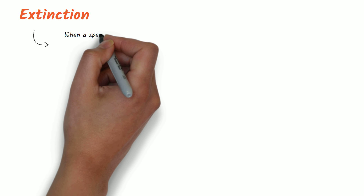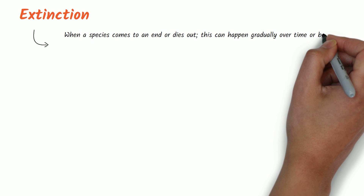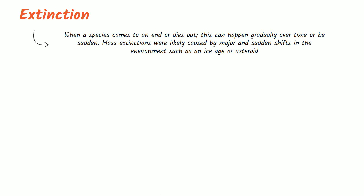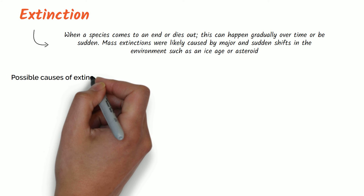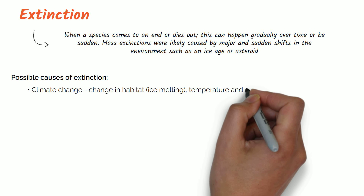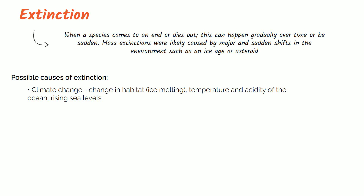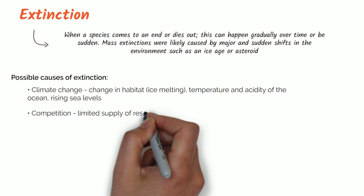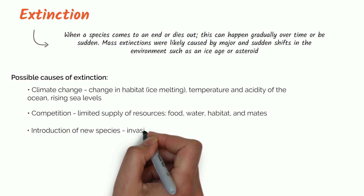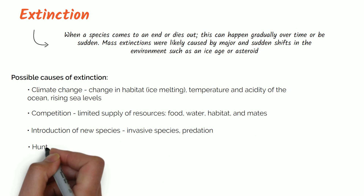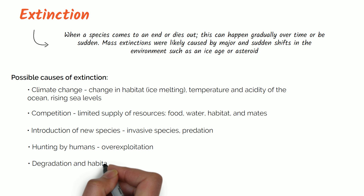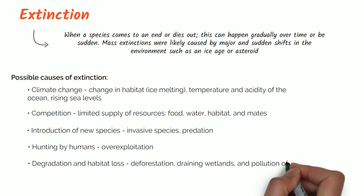Extinction is when a species comes to an end or dies out. This can happen gradually over time or suddenly — mass extinctions were likely caused by major, sudden shifts in the environment such as an ice age or an asteroid impact. Possible causes of extinction include: climate change causing habitat shifts such as ice melting, temperature and acidity changes in the ocean, and rising sea levels; competition for limited resources such as food, water, habitat and mates; introduction of invasive species and predation; hunting and overexploitation by humans; and degradation and habitat loss such as deforestation, draining wetlands and pollution of water, soil and air.